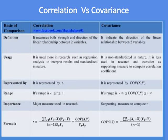Correlation is the major measure used in research, while covariance is a supporting measure used to compute R. The formula for correlation coefficient R equals the covariance of X and Y divided by the standard deviation of X multiplied by the standard deviation of Y. The formula for covariance equals the sum of (X minus X-bar) multiplied by (Y minus Y-bar), divided by N minus 1.